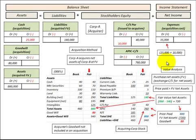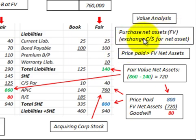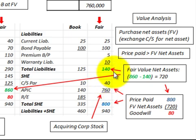To account for this acquisition, we're going to do a value analysis. We're going to purchase these net assets at their fair value, and we're going to exchange common stock for the net assets. Corporation A is going to issue common stock to Corporation B in exchange for the net assets of Corporation B.